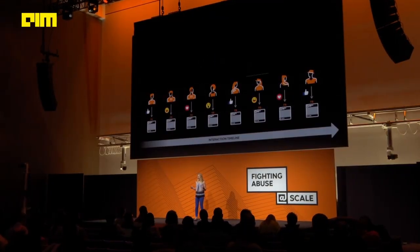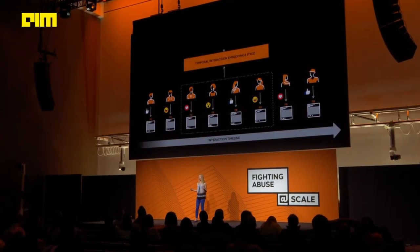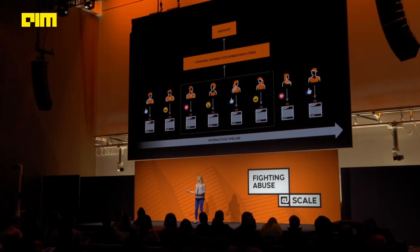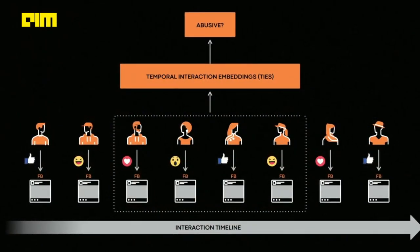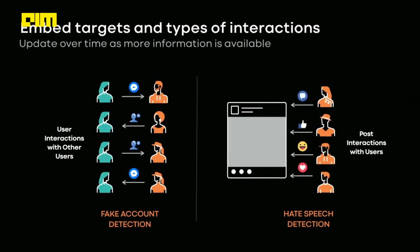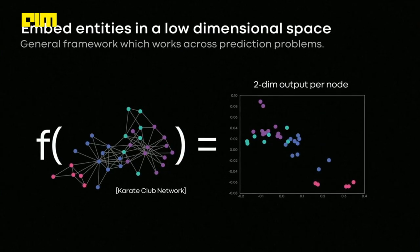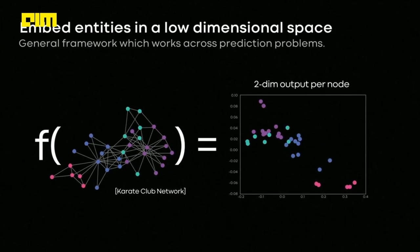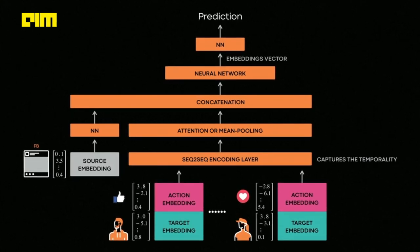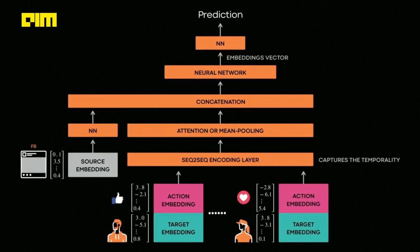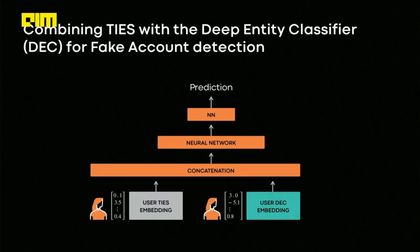Facebook, on the other hand, uses an algorithm called Temporal Interaction Embeddings or DIVs. It is a supervised deep learning model that captures static features around each interaction's sources and targets, as well as temporal features of the interaction sequence. However, producing these features is labor-intensive, requires deep domain expertise, and may not capture all the important information about the entity being classified.